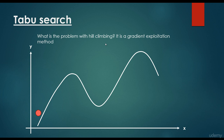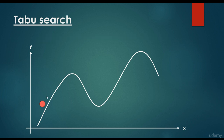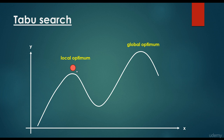So what's the problem with hill climbing? It is a gradient exploitation method. We start from a position and keep going in the direction of the gradient. For example, we are looking for a global maximum. We use hill climbing and follow the gradient until we hit the optimum — but this is the local optimum, not the global optimum. If we take another step, the value is going to be smaller than the actual one, so we go back to the local optimum and are not able to find the global optimum.